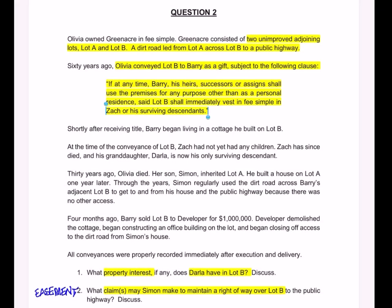Barry has been conveyed a gift. Shortly after receiving title, Barry began living in a cottage he built on Lot B — telling us he is living on it in accordance with the condition. But I've decided that condition is invalid and what Barry really has is a fee simple absolute. At the time of the conveyance of Lot B, Zach had not yet had any children. Zach has since died, and his granddaughter Darla is now his only surviving descendant — that is the person in call one. I think Darla has no property interest in Lot B because the executory interest was invalid due to violating the rule against perpetuities.